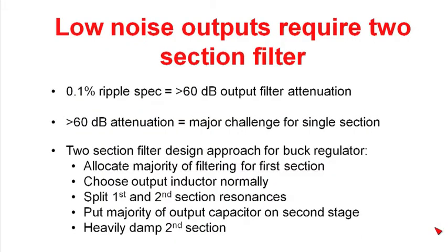In low-noise requirements, many times you'll see ripple specifications down in the 0.1%. When you translate that to decibels, you'll see that you need a ripple attenuation of greater than 60 dB.